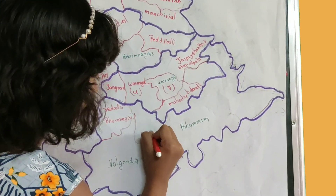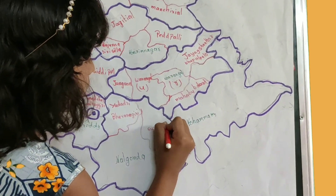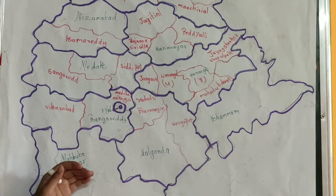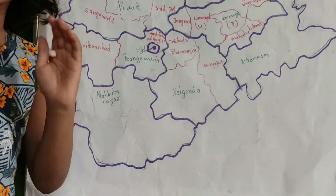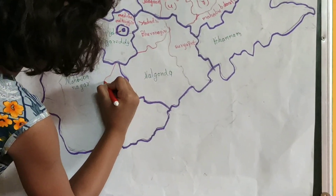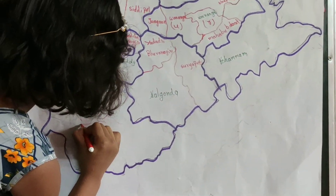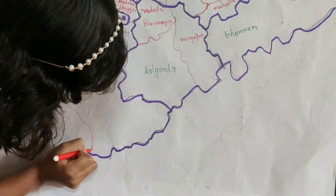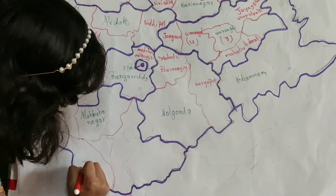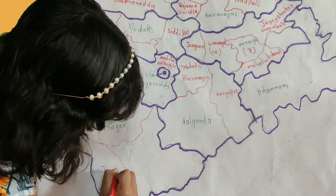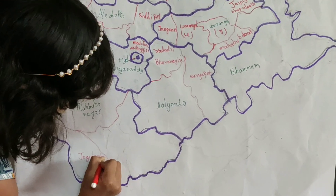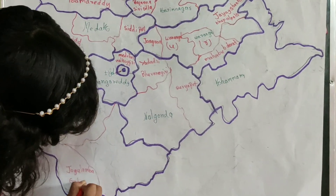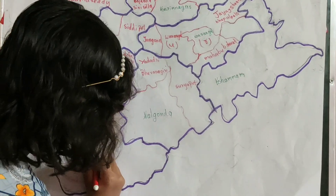Next, Mahabubnagar district is divided into 4 districts: Mahabubnagar, Jogulamba Gadwal, Gadwal, and Wanaparthy.